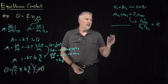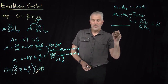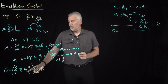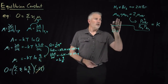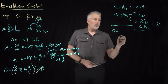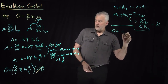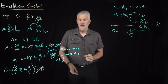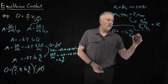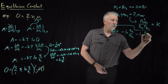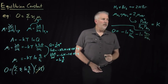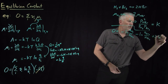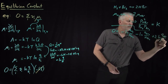Translating this equation into the H2/Br2 case: 0 must equal the sum of stoichiometric coefficients times log(q/N). The species are H2, Br2, and HBr. The stoichiometric coefficient for H2 is −1, giving minus log(q_H2 / N_H2). The coefficient for Br2 is also −1, giving minus log(q_Br2 / N_Br2). The stoichiometric coefficient for HBr is +2, giving plus 2·log(q_HBr / N_HBr).